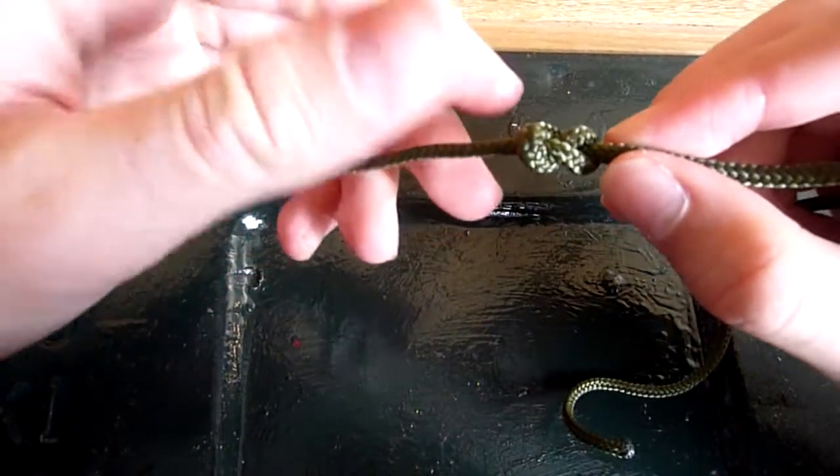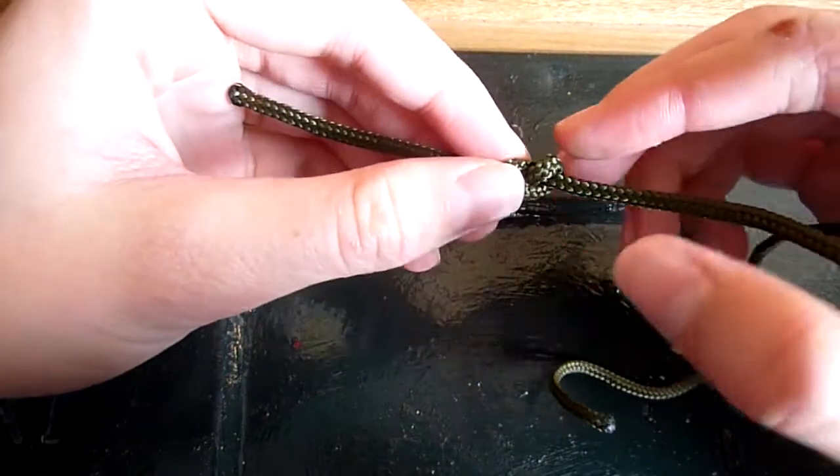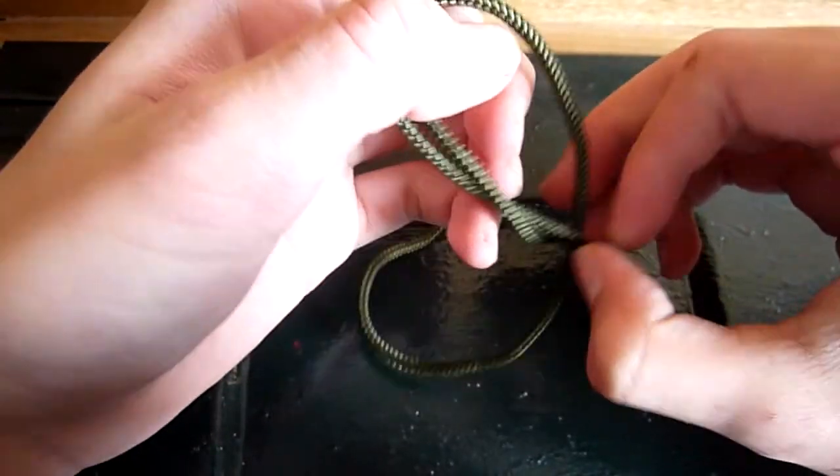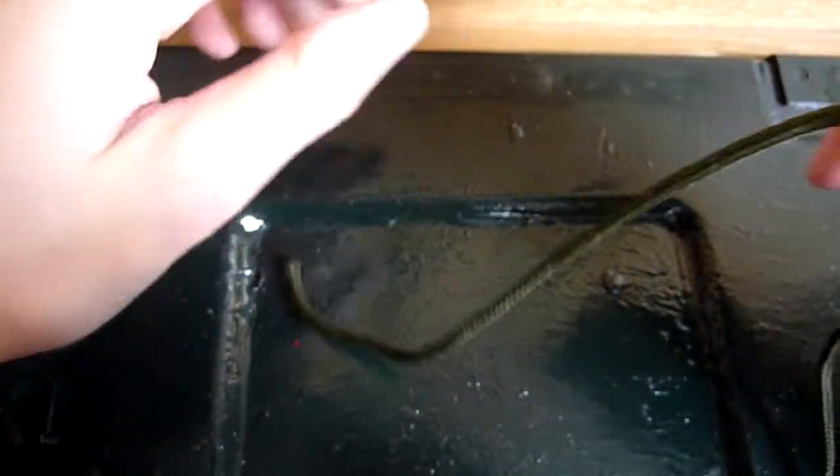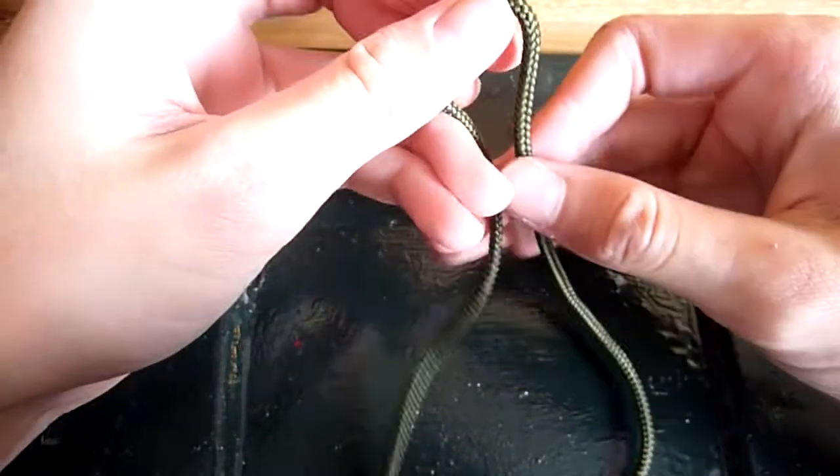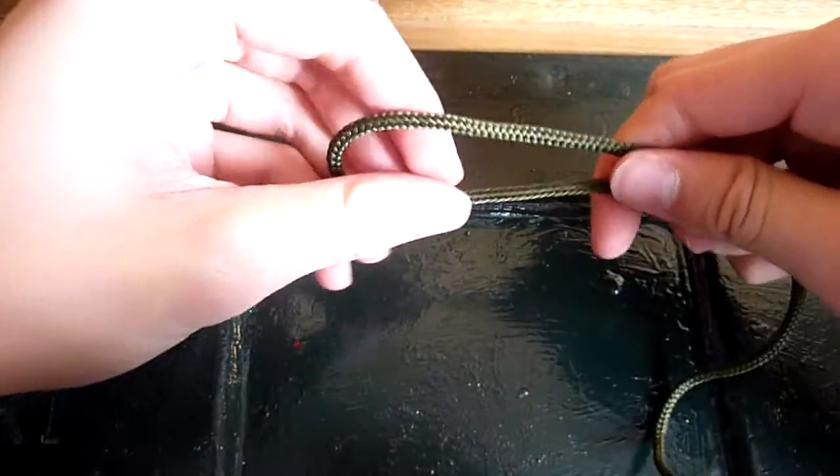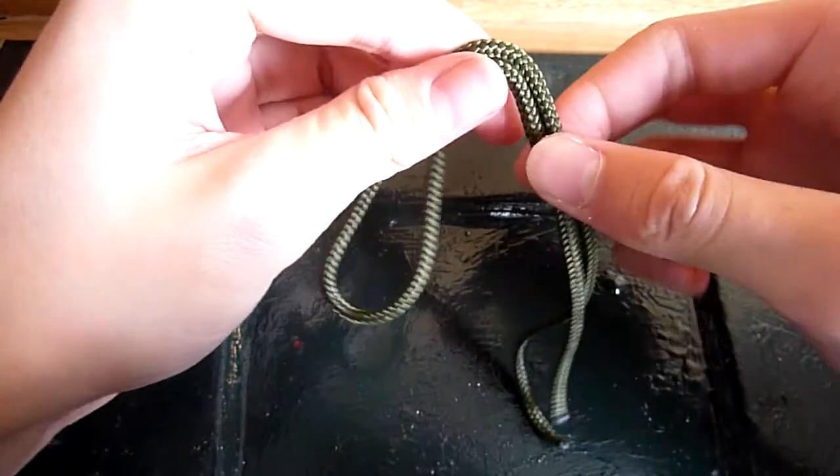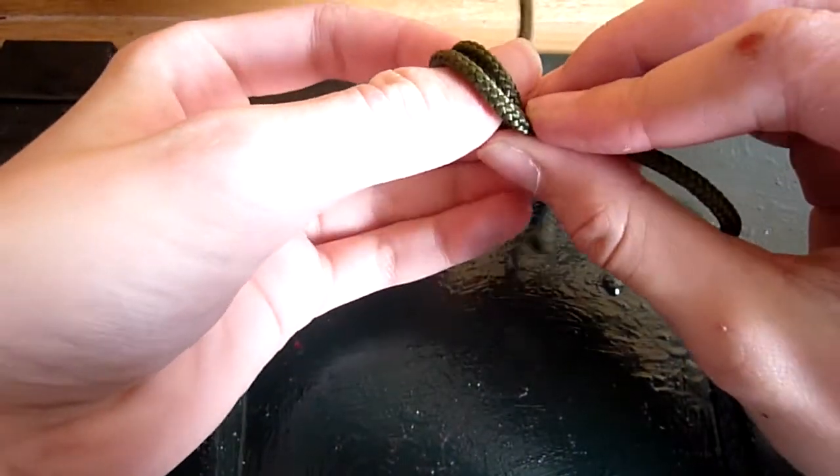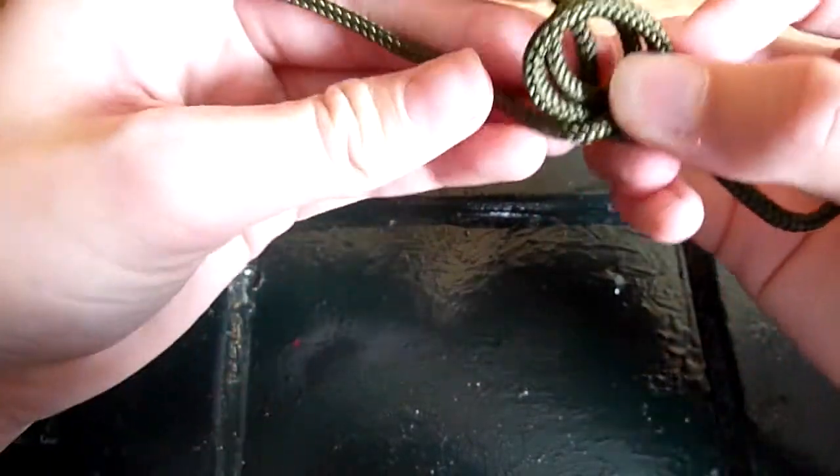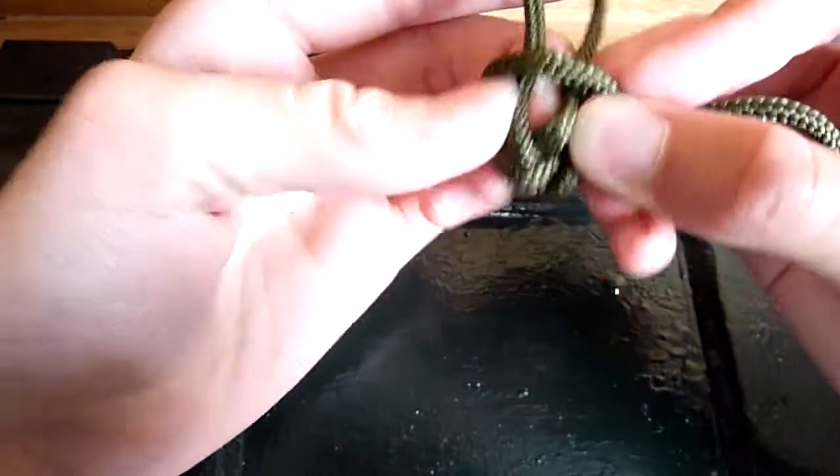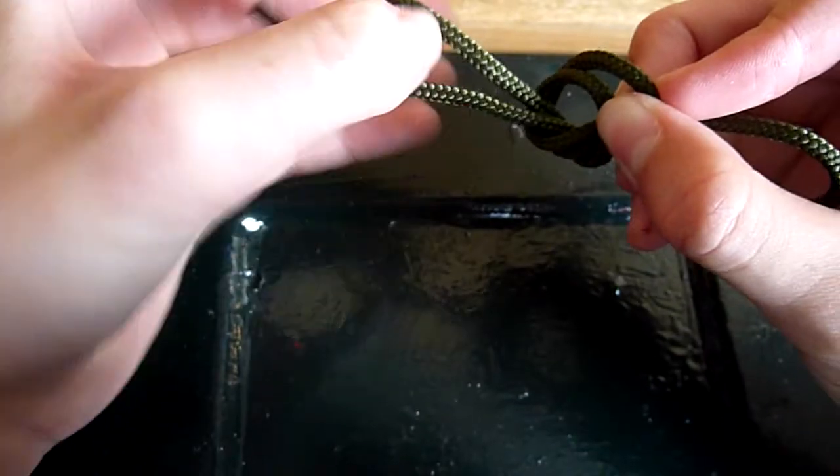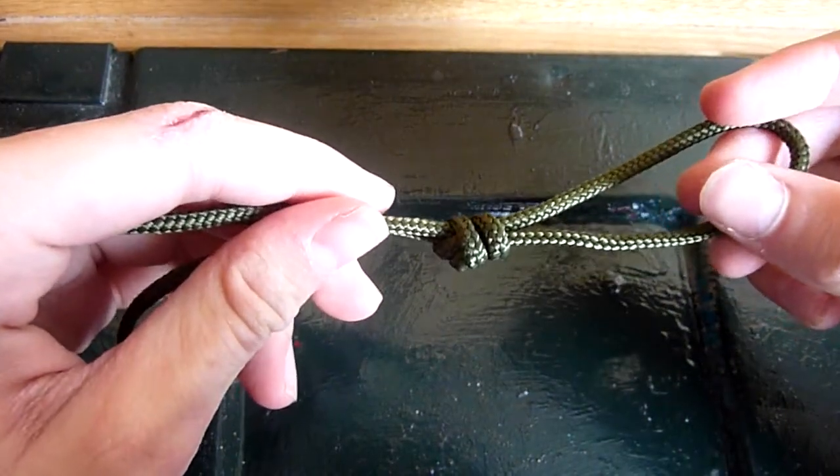So called a figure of eight because it looks like the number eight, but there's also a double figure of eight which can be used for throwing or when a larger knot is needed. So just loop like that, pass it over, poke it through, there you go.